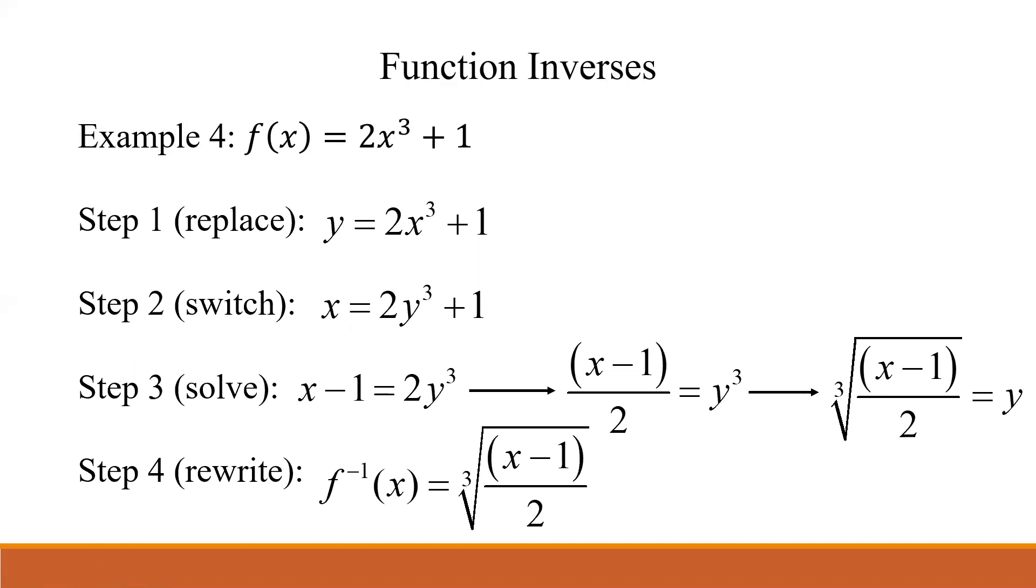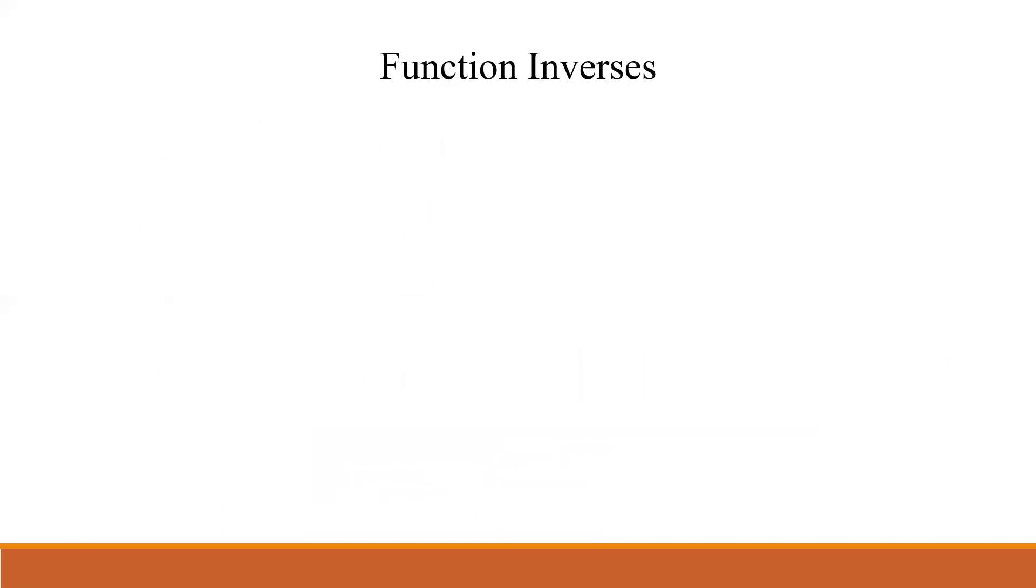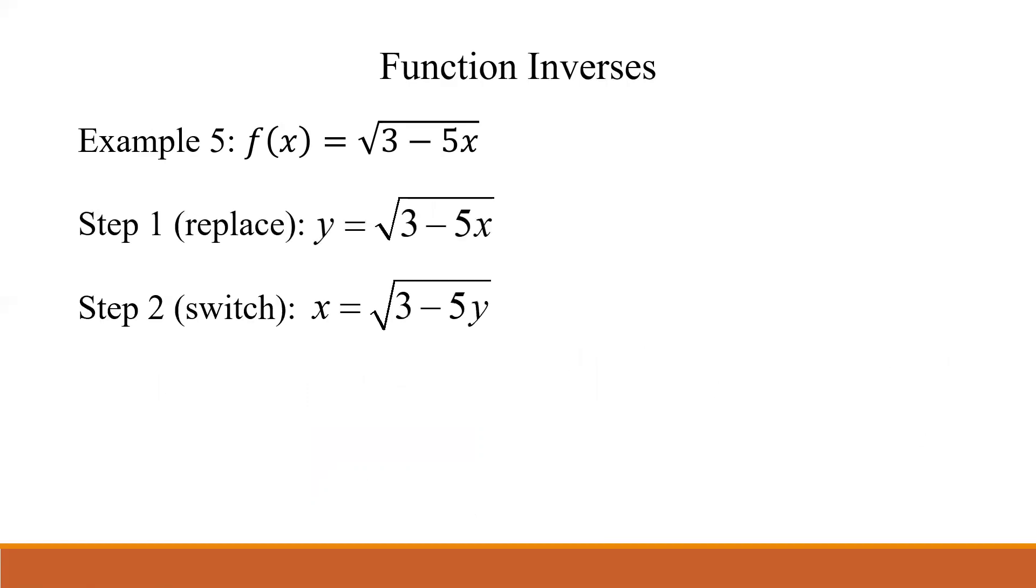Example number five. We'll do one more now with a radical in there. So how do we undo a radical? You're always thinking about undoing, always doing that opposite function. Here we have f(x) = sqrt(3 - 5x). Again, you should be able to repeat it on your own now. Replace, switch, solve, rewrite.